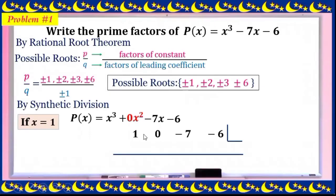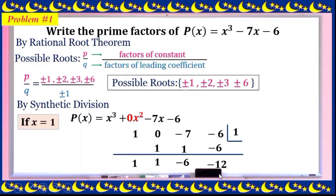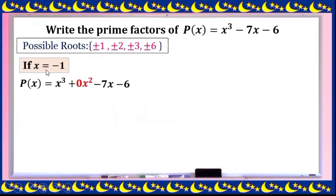If we try positive 1 as a possible root using synthetic division — bring down 1, multiply 1, add to get 1, multiply 1, add -7 to get -6, multiply -6 by 1 to get -12. The remainder is -12, so this chosen root is not a root of the given polynomial.